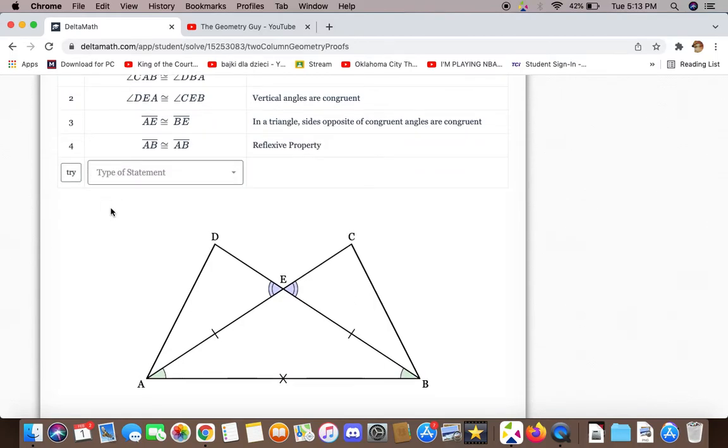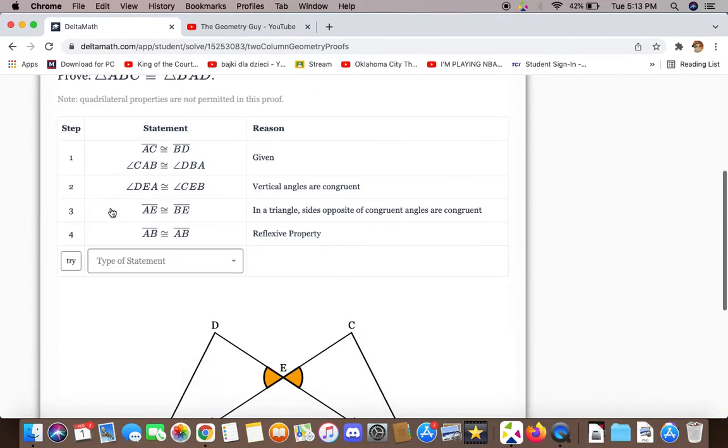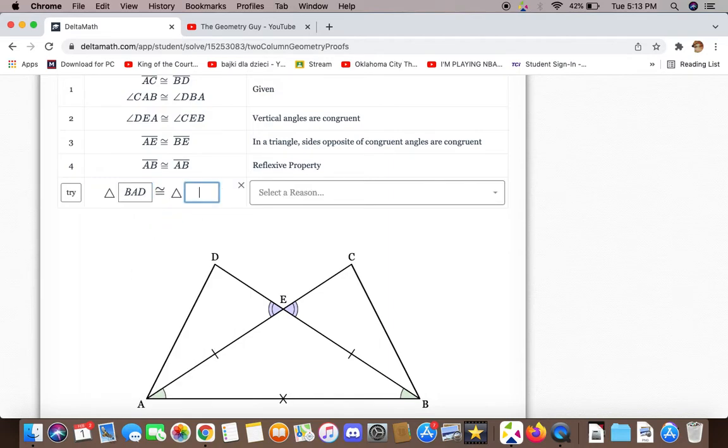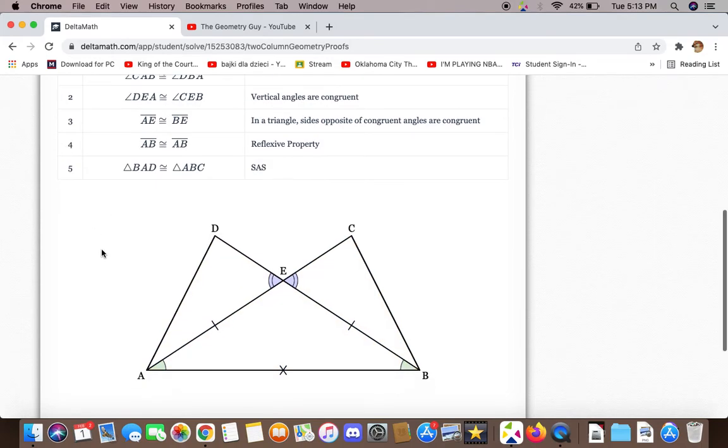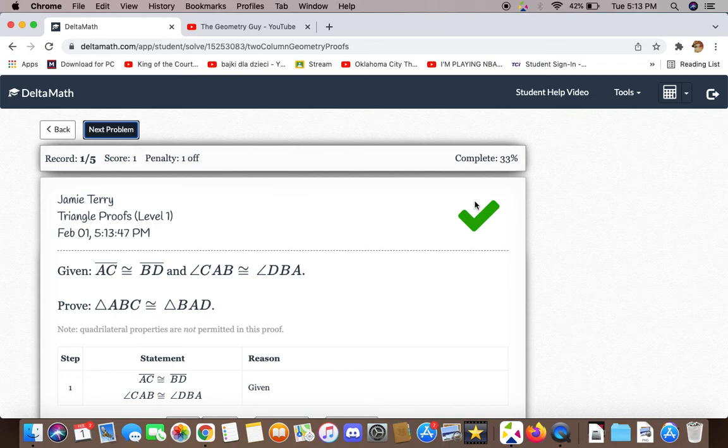We now have enough information to prove that ABC is congruent to BAD and the reason for that is side angle side. And there we go.